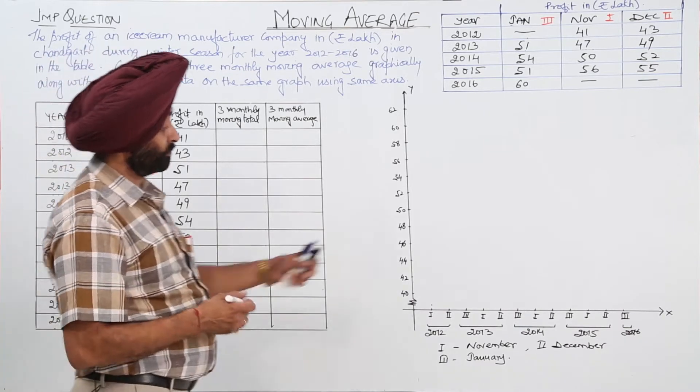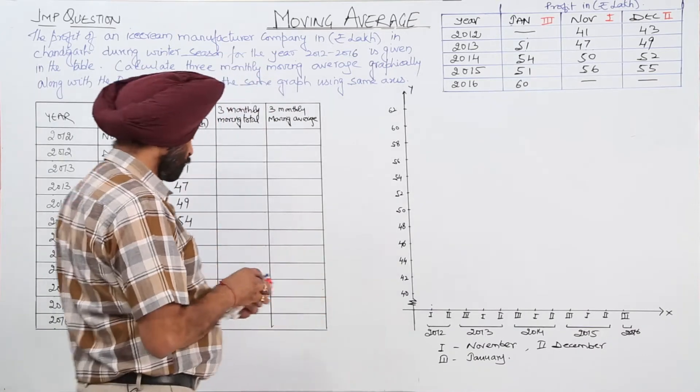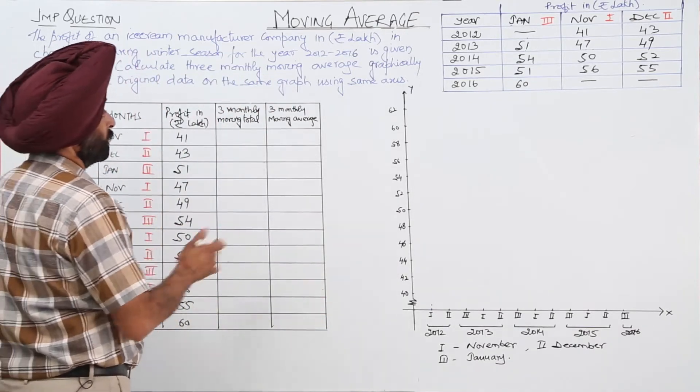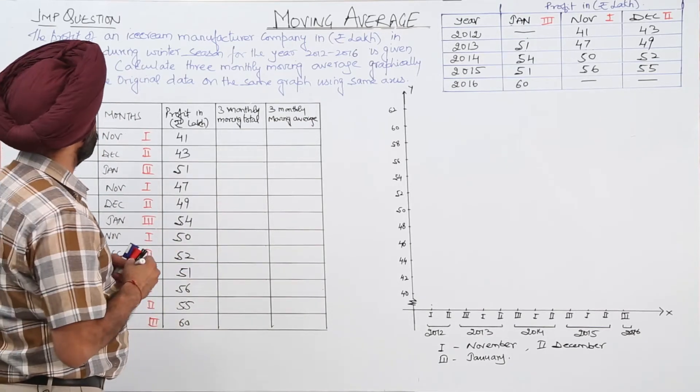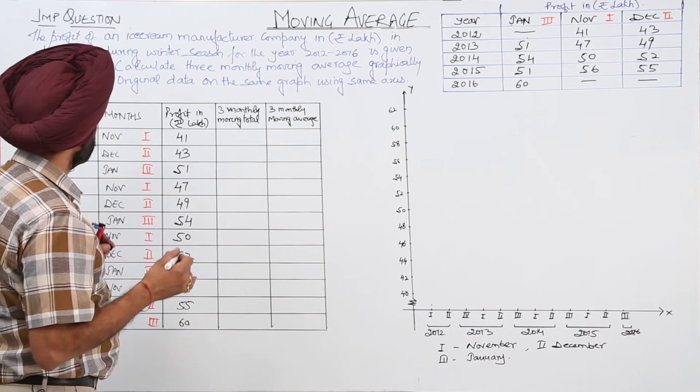I have also drawn a graph. So now let's fill the data. Now from 41, 43, 51, data is already been fitted here. Now let's find the summation for the 3 terms.